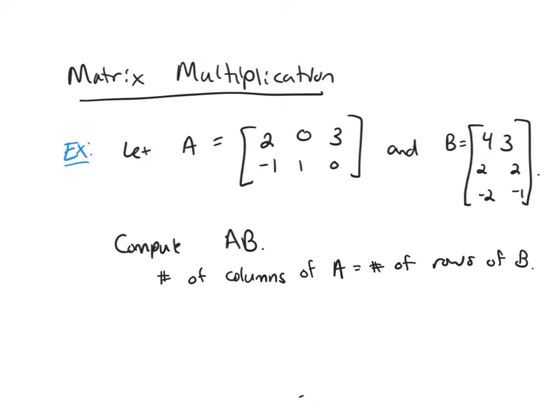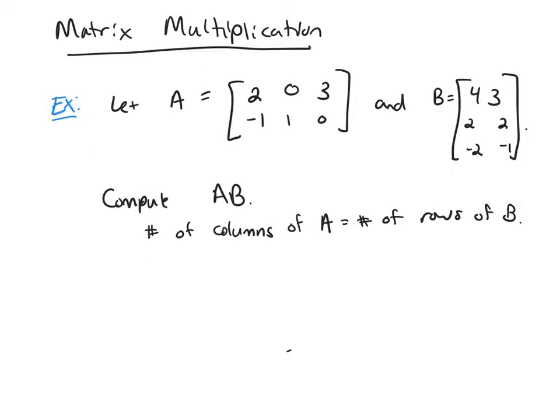So here if I look, I have A and B. A is a 2 by 3 matrix. B is a 3 by 2 matrix. So if you look, the number of columns equals the number of rows. These are equal,